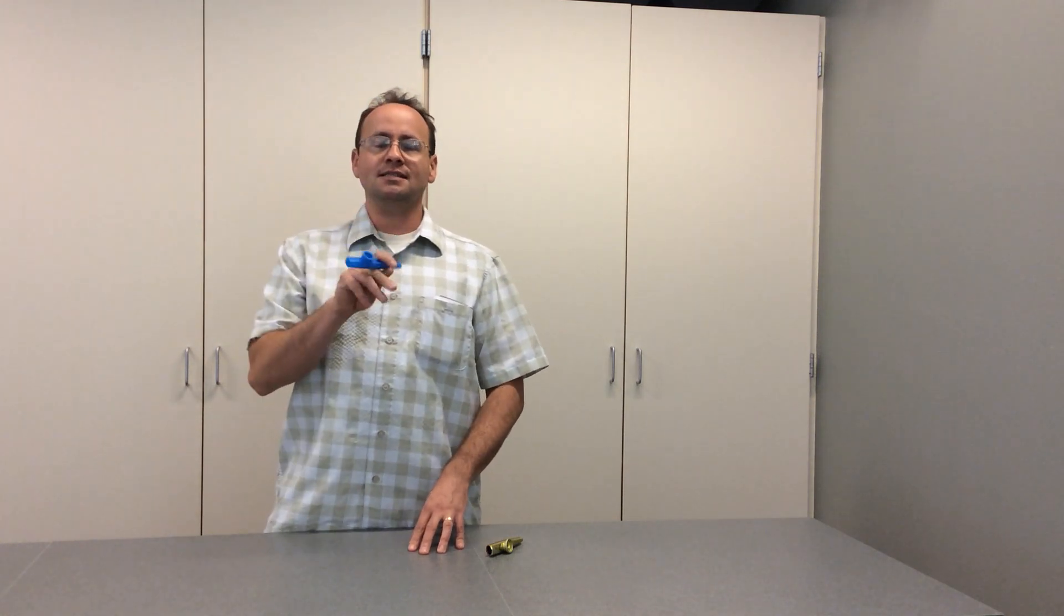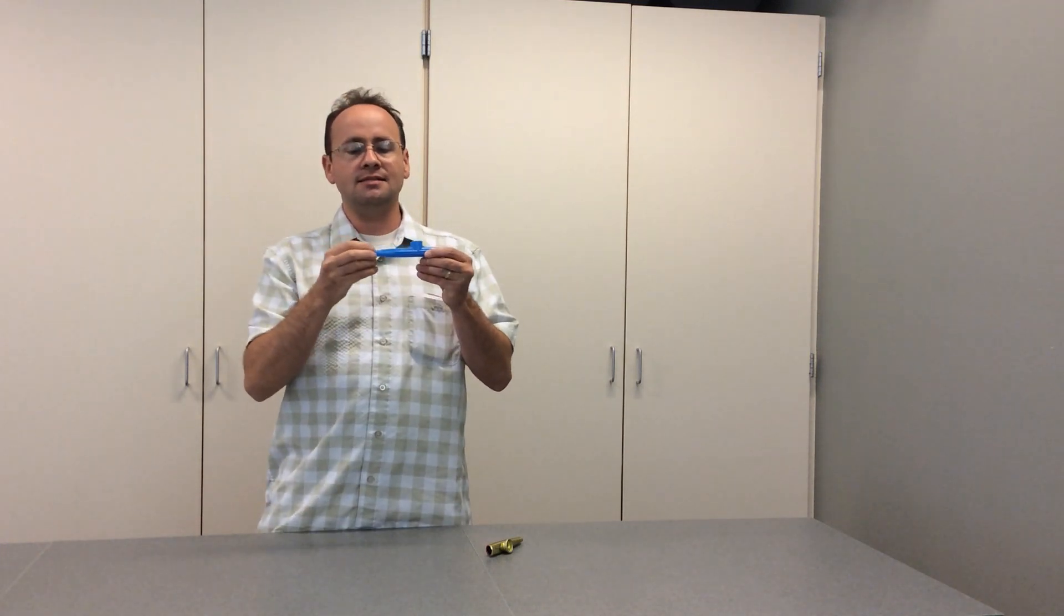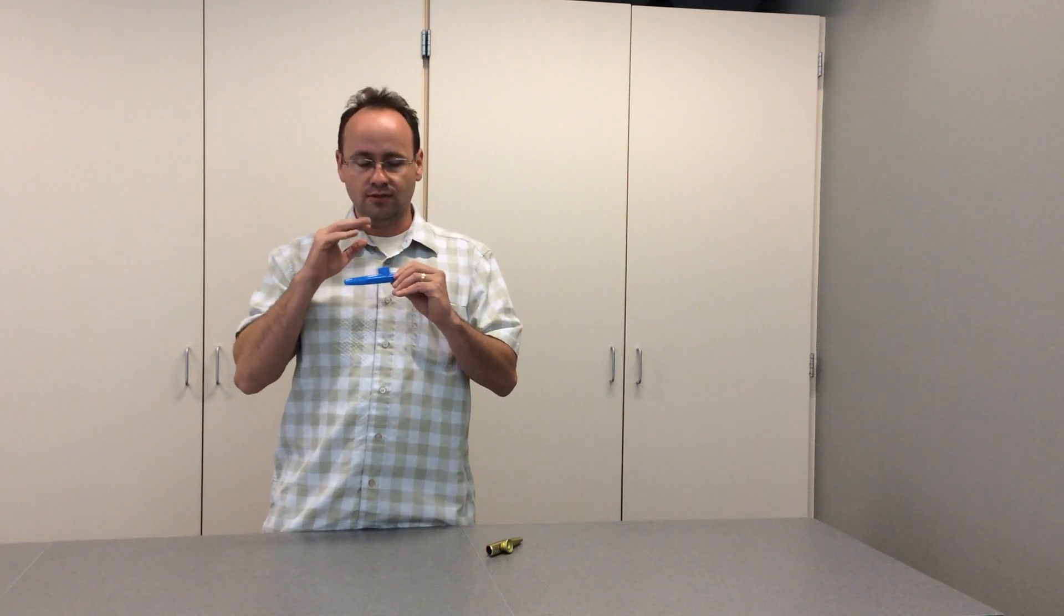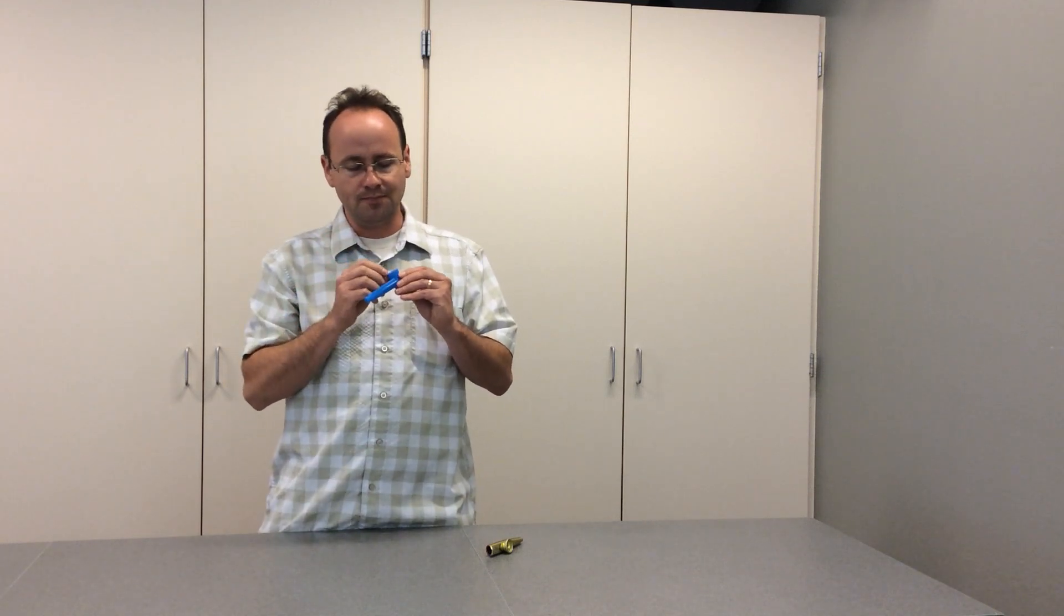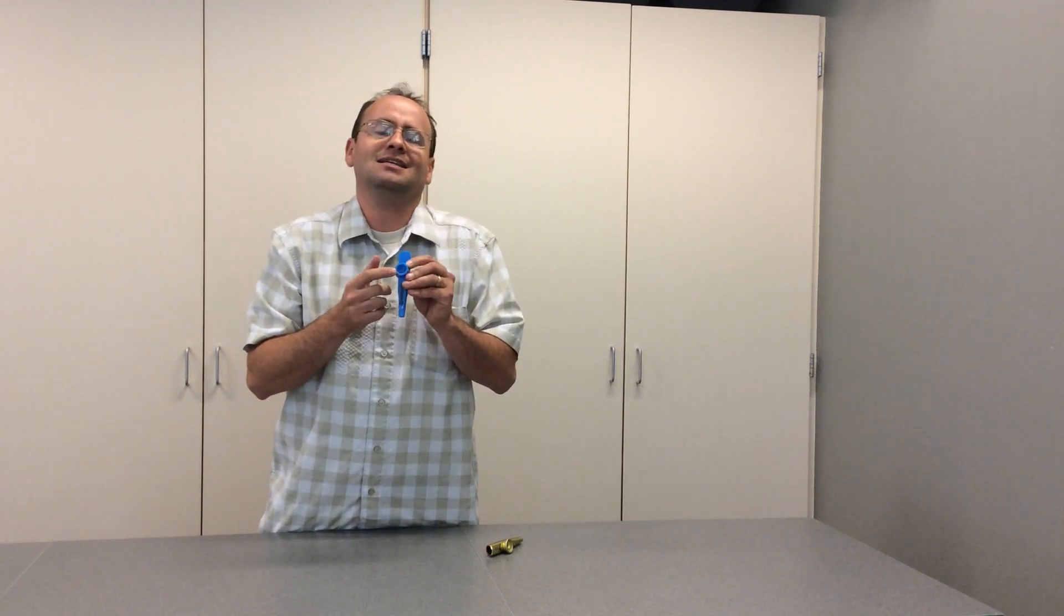And all the kazoo does is it takes the sound of your hum that's inside your throat and inside your mouth. And it sends it out and makes it bigger and it adds a little bit of vibration or a little bit of crinkly. I think it's plastic or wax paper that's on there and it vibrates a little extra bit and it gives some extra sound to your humming.